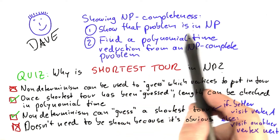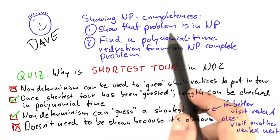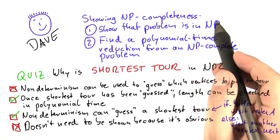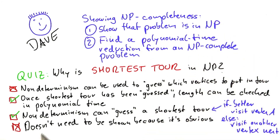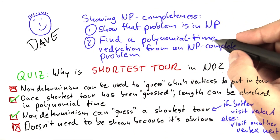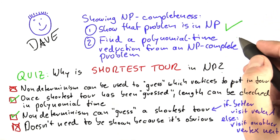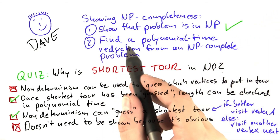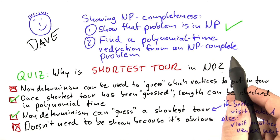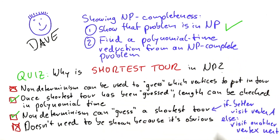We'll actually later in this course come across some problems where you might initially think that they are in NP, but actually they're much harder than problems that are in NP. So now we have completed the first step: we know that shortest tour is in NP, and now comes the part of finding a polynomial time reduction from an NP-complete problem to show that shortest tour is NP-complete.